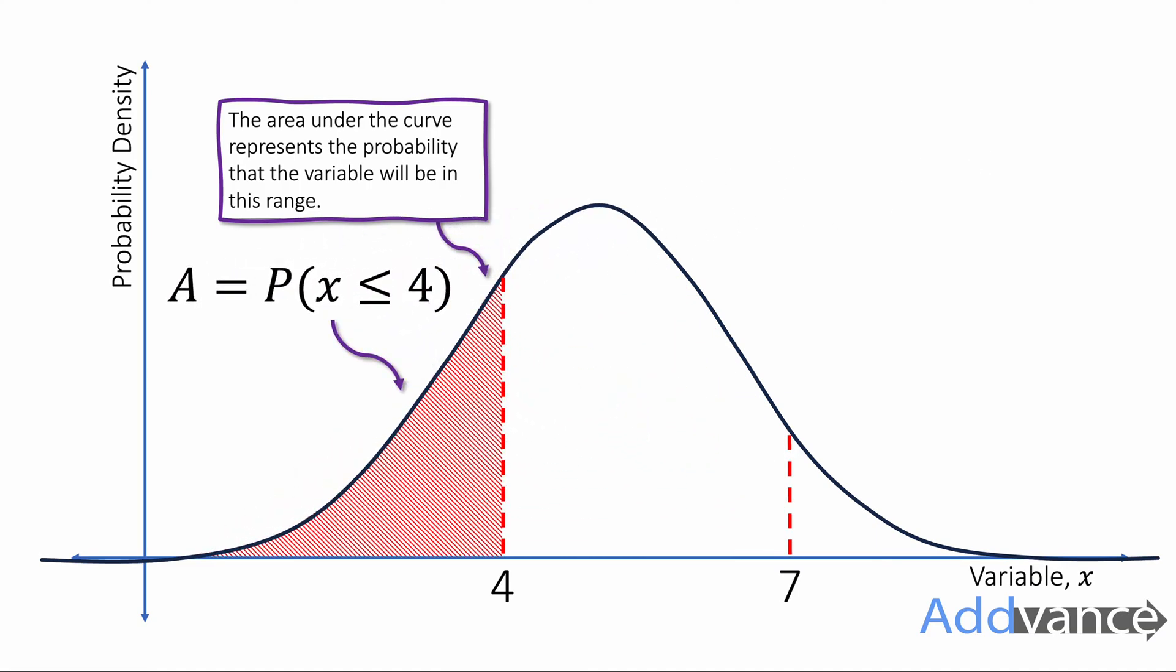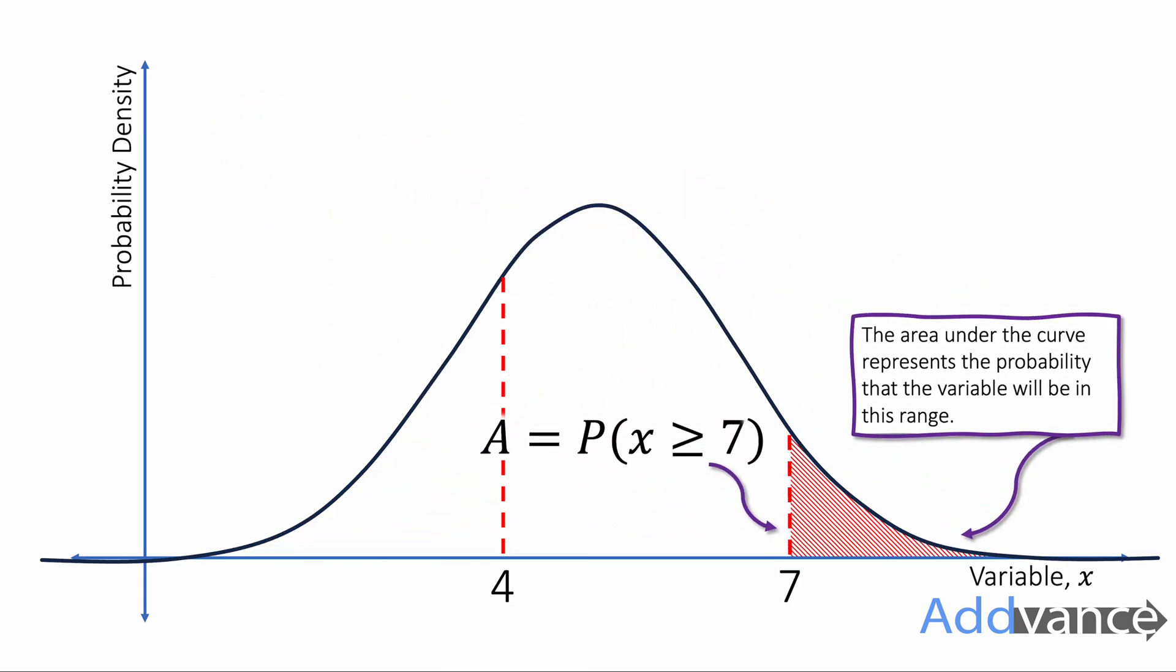We can also have this area here, this is the probability that x will be less than 4. Or over here the probability that x will be more than 7, or more than or equal to 7. The area under the curve represents the probability that it will be that value.